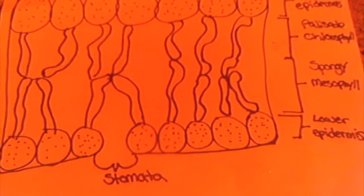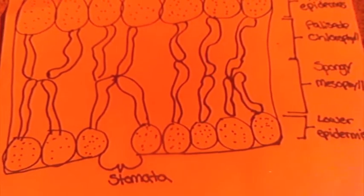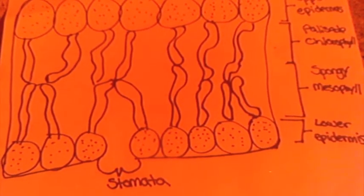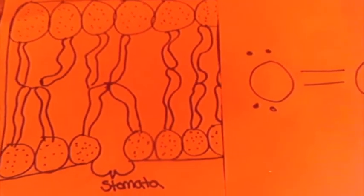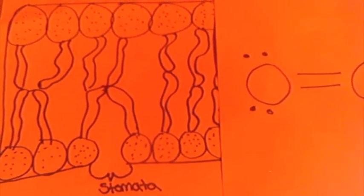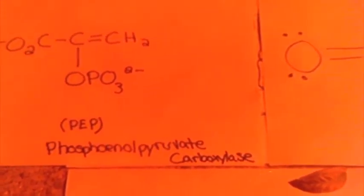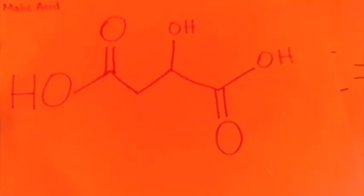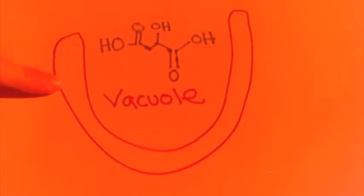During the night in plants with CAM photosynthesis, the first thing that happens is they open their pores, also known as their stomata, and the leaves take in carbon dioxide from the atmosphere. They metabolize some of their stored starch to phosphoenolpyruvate, a three-carbon molecule. These two carbon-based molecules form to make malic acid, which is then stored in the vacuole of the cell.